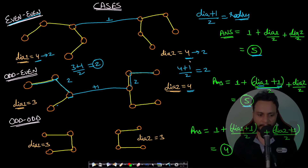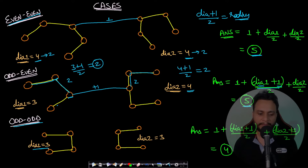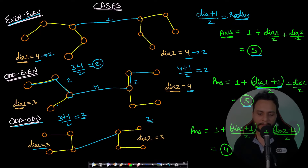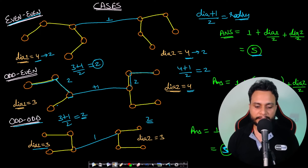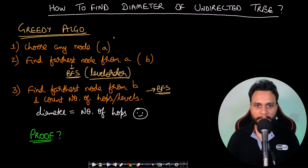For the odd-odd case: left side has diameter 3, so radius = (3+1)/2 = 2; right side similarly gives radius 2. Joining them: 2 + 1 + 2 = 5. All three cases are now clear. The key formula is: radius = (diameter + 1) / 2 using integer division.